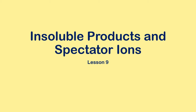Welcome to National 4, National 5 Chemistry. We are still on unit 1 looking at acids and alkalis, and we're going to finish this set of lessons off with a two-part lesson. The first part is going to look at what we call insoluble products, and the second part is going to look at something we call spectator ions.